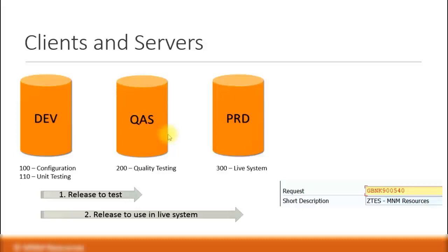Let's look at clients and servers. Usually in an SAP implementation, you would have three different servers: the development server, the quality assurance server, and the production server.